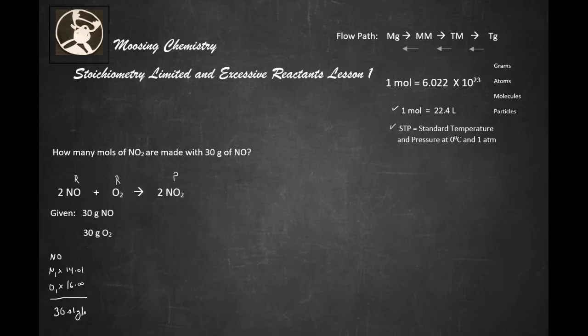What about NO2? N is 1 times 14.01, O is 2 times 16.00, and we do the math on that and that's going to give us 46.01 grams per mole.